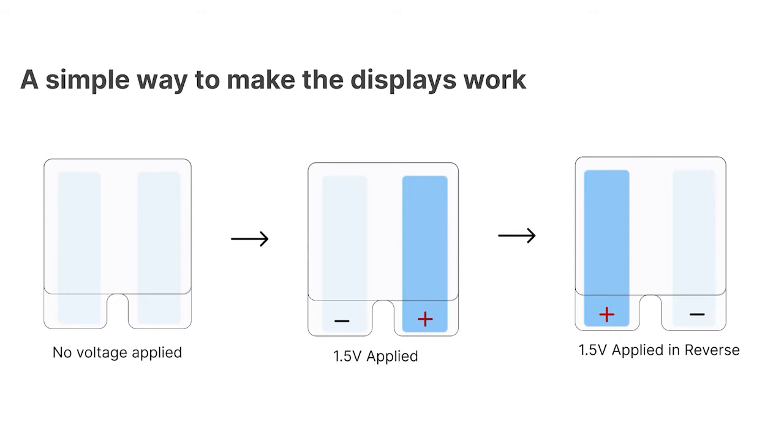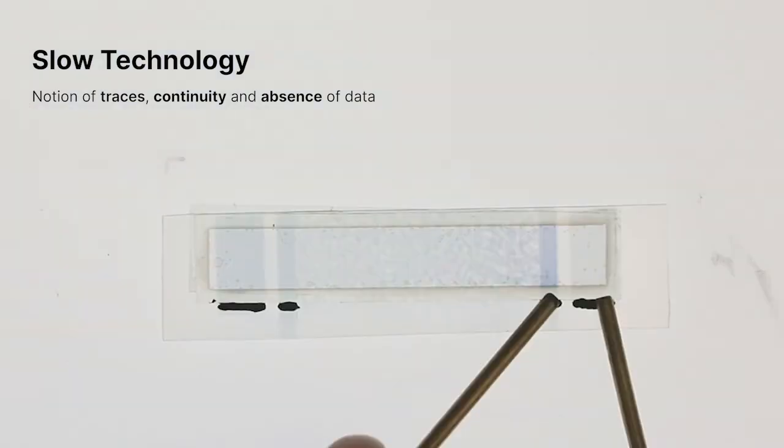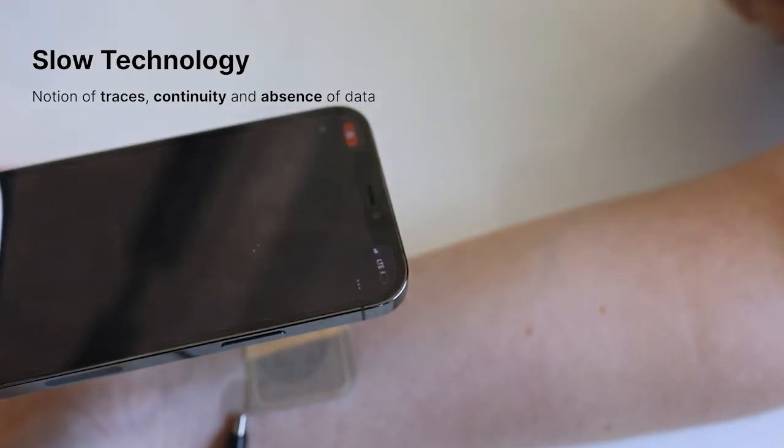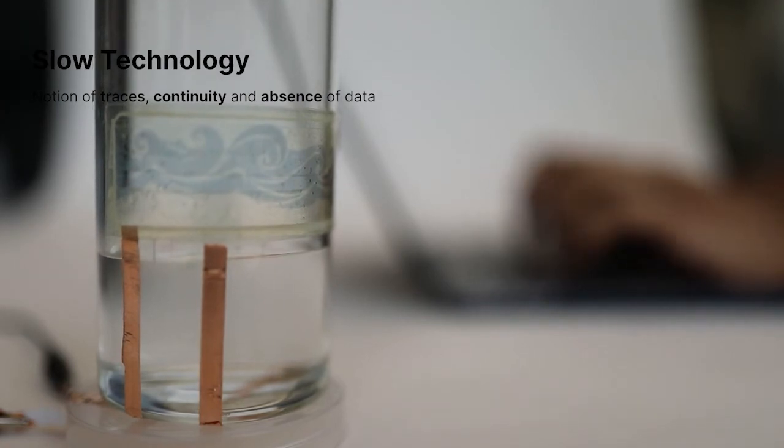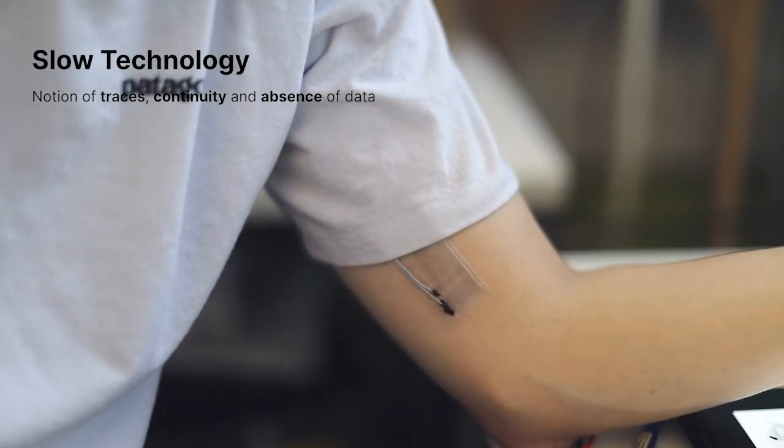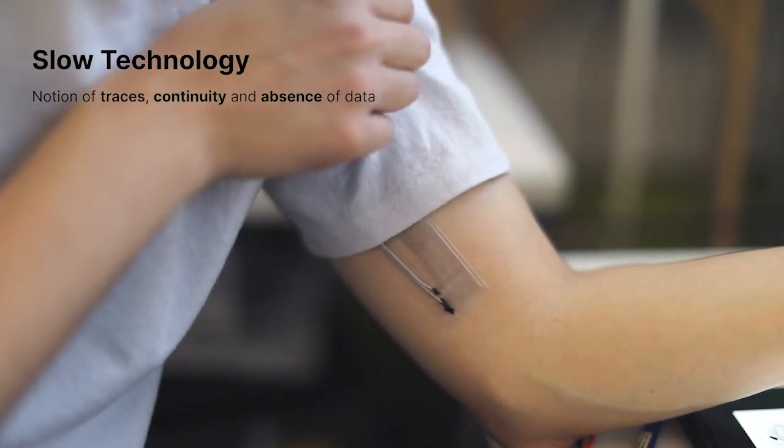This functionality of electrochromic displays makes them easy to use and implement. Our design exploration centers around how different forms of slowness could be rendered through a closer look into the transitive states of electrochromic materials. We focus on the notion of traces, continuity, and absence of data along with techniques for utilizing electrochromic materials for such slow behaviors. The paper discusses how material slowness can be leveraged to promote a seamless integration of wearable products with the human body.